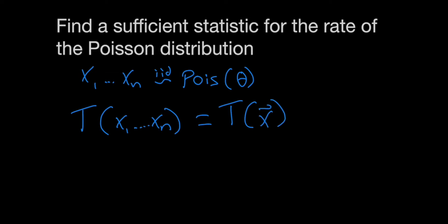The first thing we need to do to find our sufficient statistic is to write down the likelihood function for all of our observations.